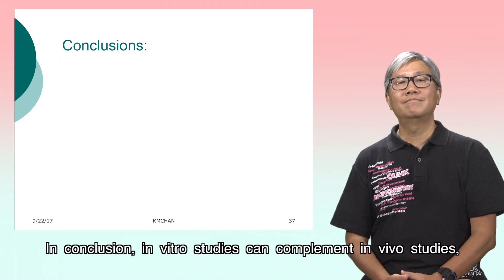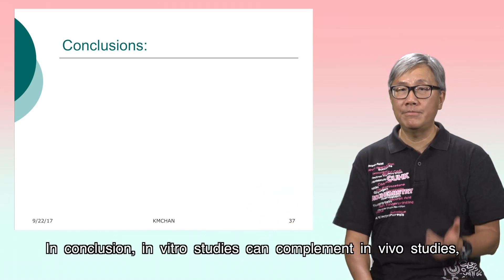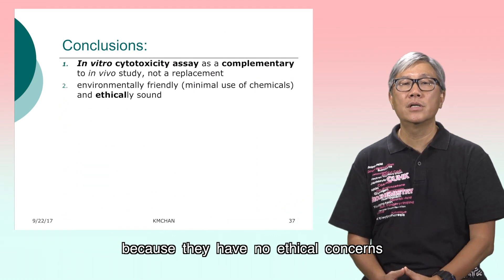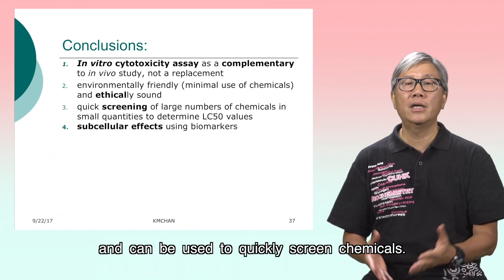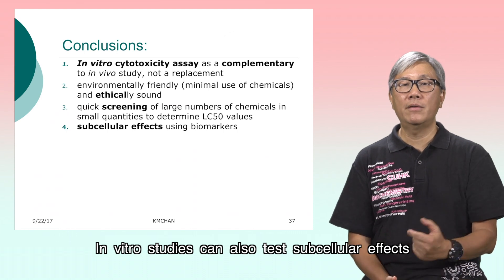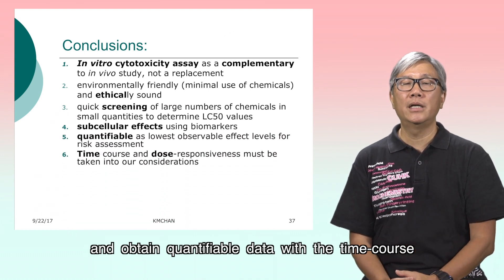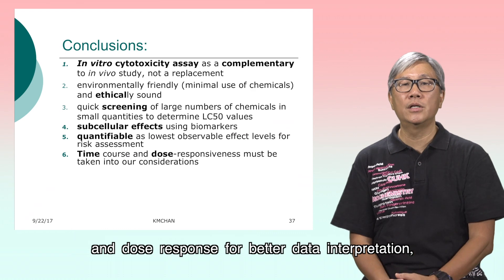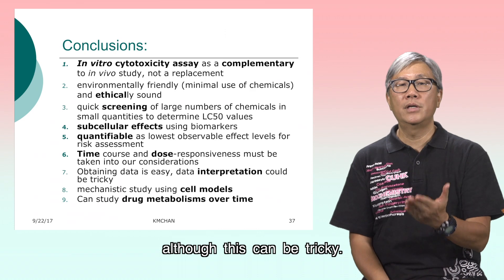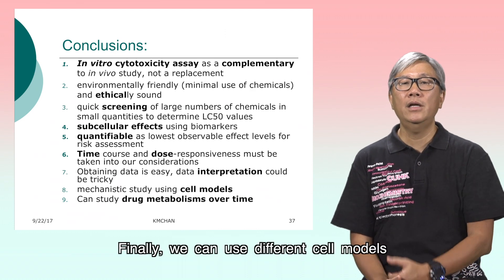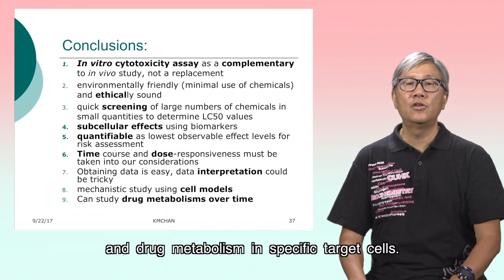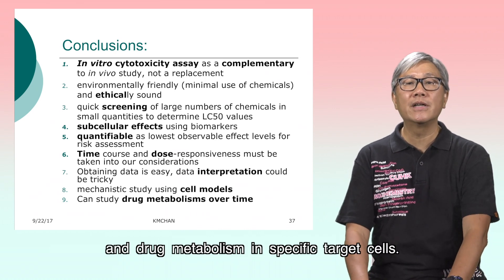In conclusion, in vitro studies can complement in vivo studies because they have no ethical concerns and can be used to quickly screen chemicals. In vitro studies can also test subcellular effects and obtain quantifiable data with the time course and dose response for better data interpretation, although this can be tricky. Finally, we can use different cell models to study the toxic effects and drug metabolism in specific target cells.